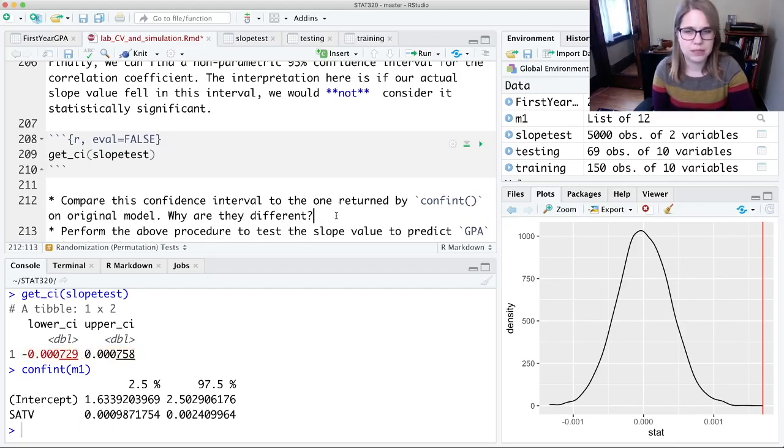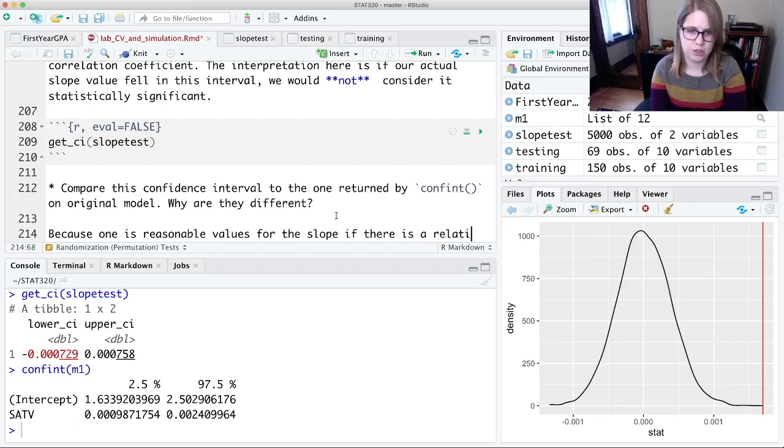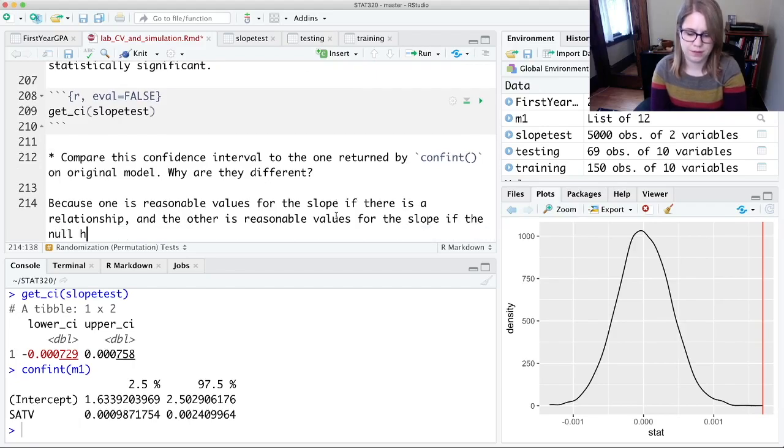And these are reasonable values we could have seen for the slope if the null hypothesis were true. So they're completely different, and they're different because one is reasonable values for the slope if there is a relationship, and the other is reasonable values for the slope if the null hypothesis were true. So they're very different ideas.